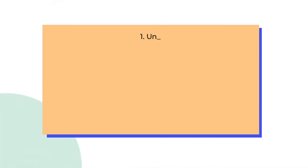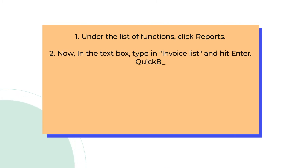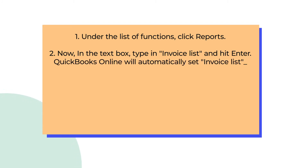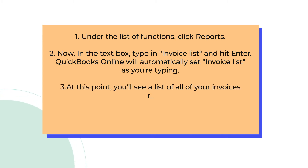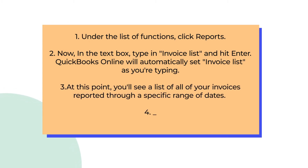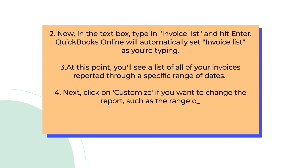First, under the list of functions, click Reports. Now in the text box, type in Invoice List and hit Enter. QuickBooks Online will automatically set Invoice List as you are typing. At this point, you will see a list of all your invoices reported through a specific range of dates.